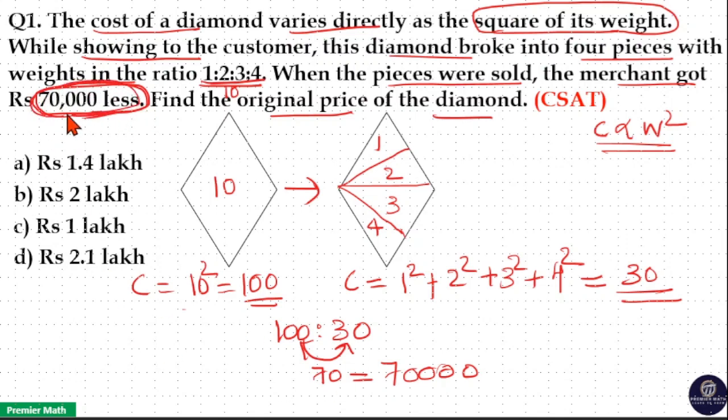Now, 70 goes one time in 70, so one part is equal to 1000 units. If one part is 1000 units, our question is what is the original price? Original price of the diamond is 100 units. 100 units means 100 × 1000, that is 1 lakh. Which means 1 lakh is the price of the diamond. Option C is your answer.